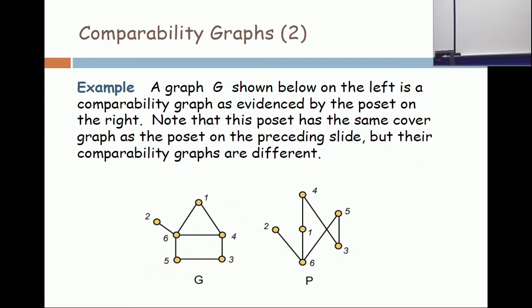See the three element chain, six less than one less than four right through the middle of the poset? That should form a triangle in the comparability graph, and it does. The triangle is at the top of the graph. Are you with me? Did everybody see that the graph on the left is the comparability graph of the poset on the right?